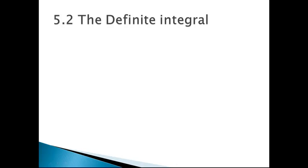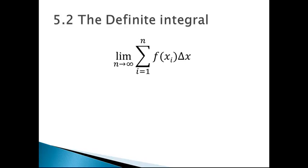In the previous video we looked at how to solve the area problem — how do you find the area under a function where there's no simple way to calculate it. The way to do that is to create what's called a Riemann sum, Riemann being a mathematician of the 1800s, where you divide the space under that curve into a certain number of rectangles.